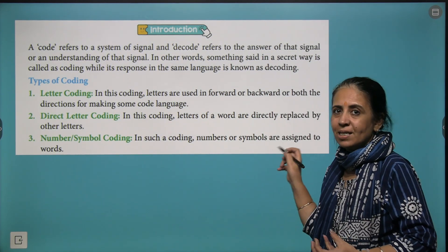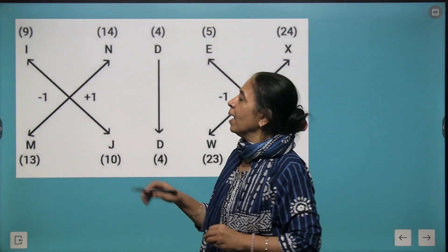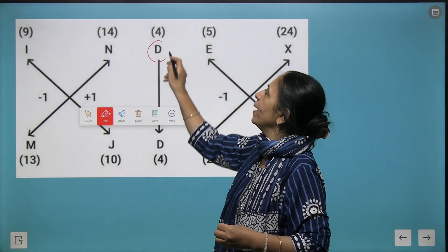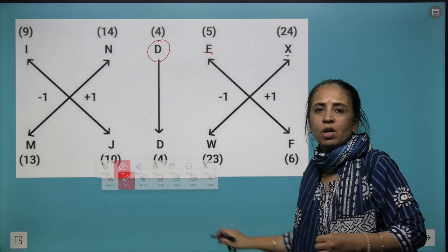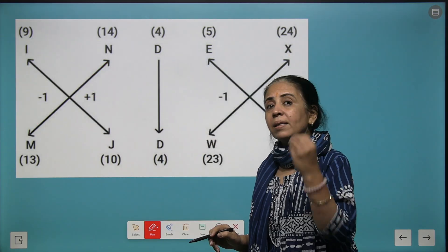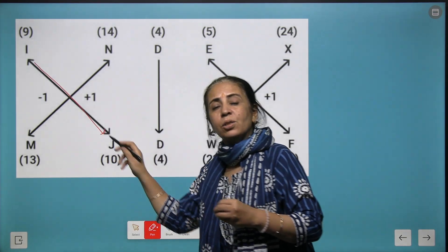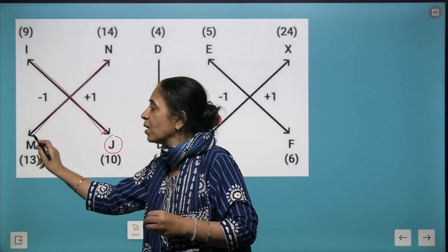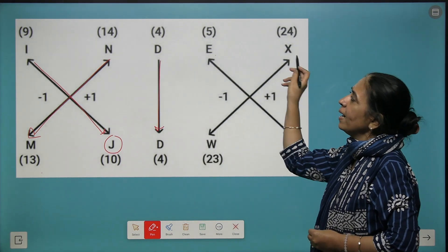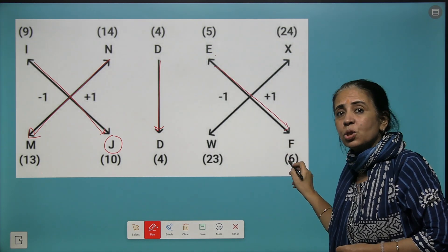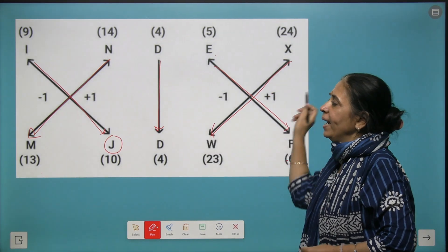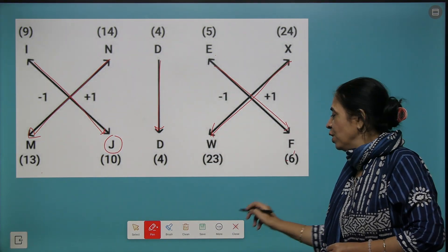Let's try writing some codes. We have a word where the first two alphabets are shuffled, the middle one remains the same, and then the other two are shuffled. So INDEX: I and N swap positions, and one is added to I giving J, one is subtracted from N giving M. D remains as is. E and X swap: E plus one is F, X minus one is W. So the code for INDEX becomes MJDWF.